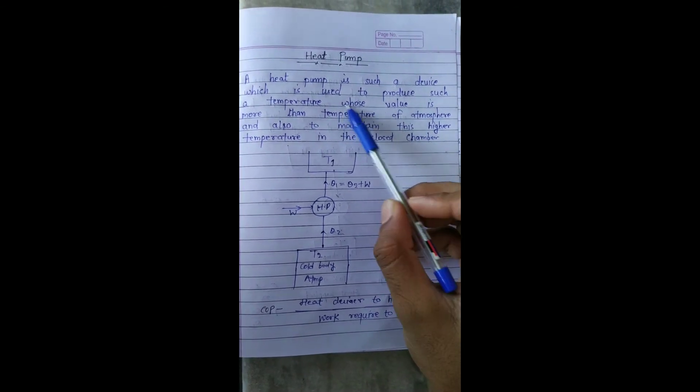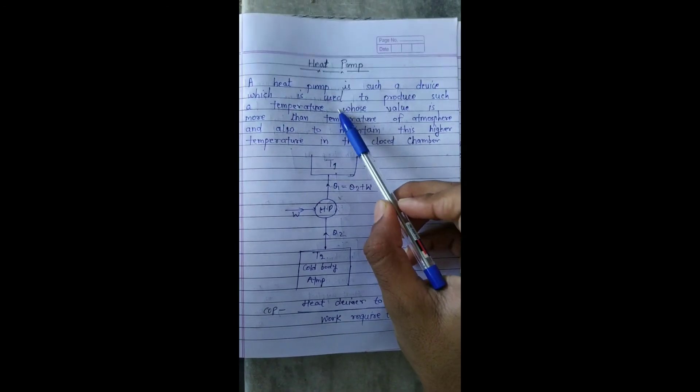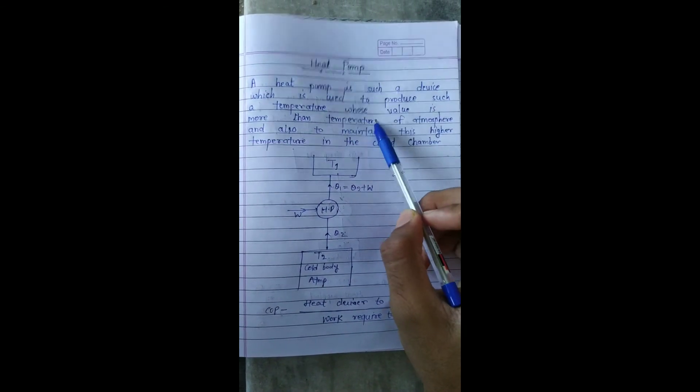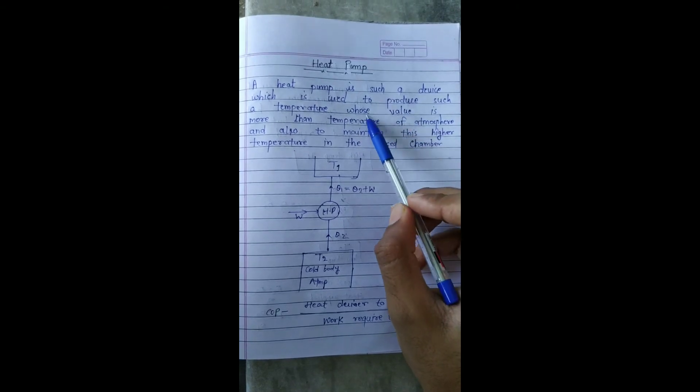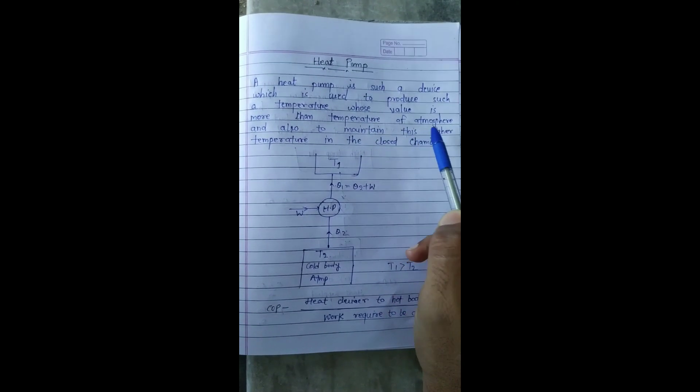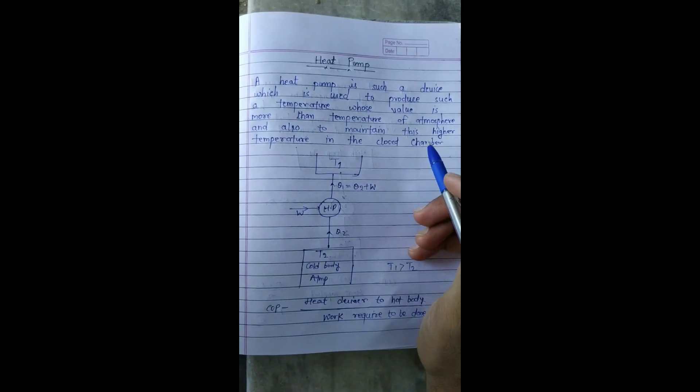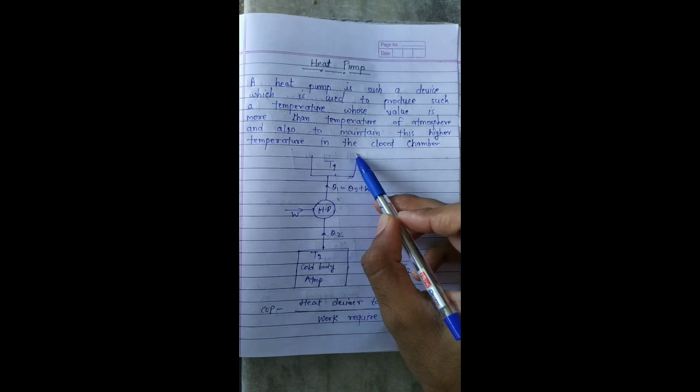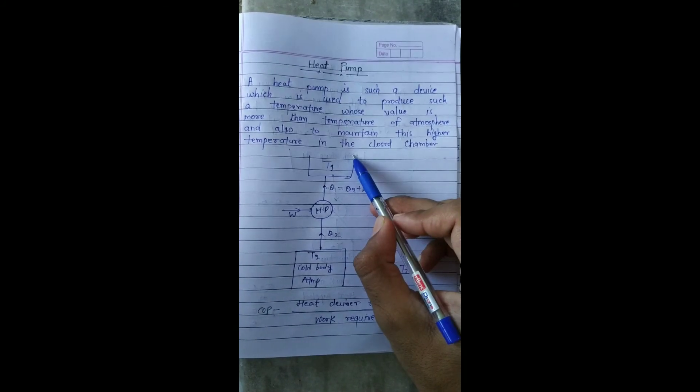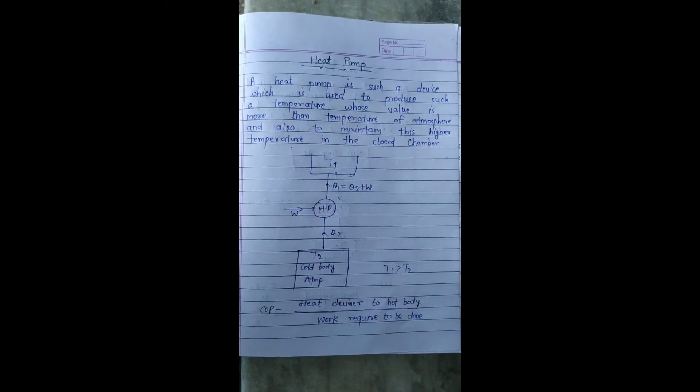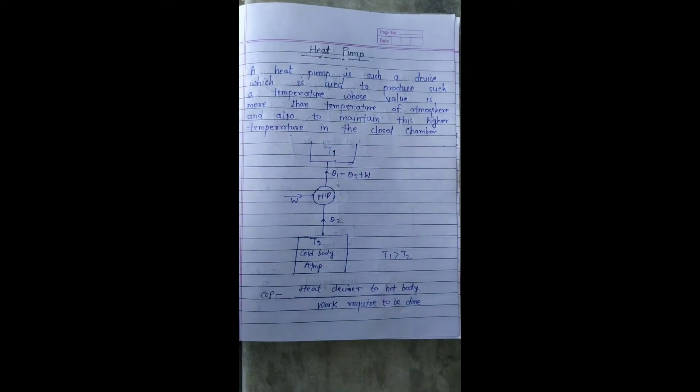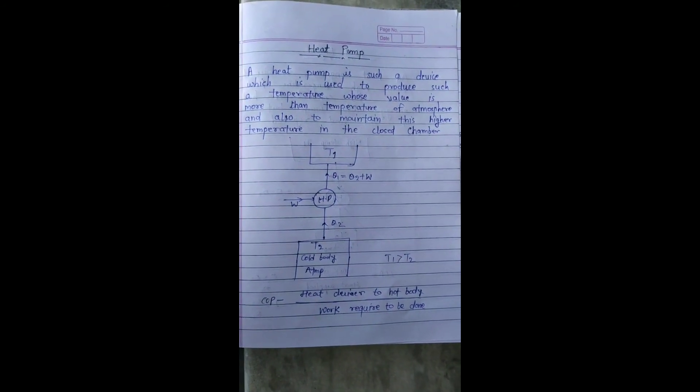Let's look at the definition. Heat pump is such a device which is used to produce such a temperature, whose value is more than temperature of the atmospheric, which is our temperature. And also to maintain this high temperature in the closed chamber. And this high temperature, which is our room temperature, to maintain it, we have to work externally.